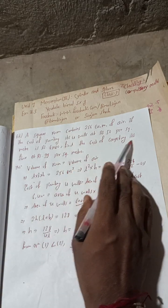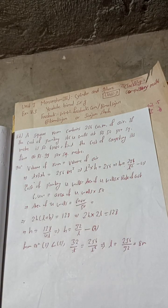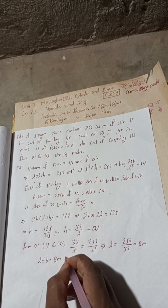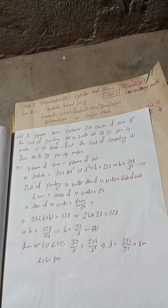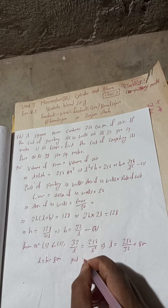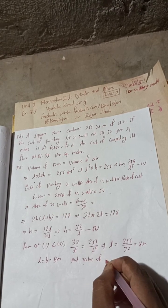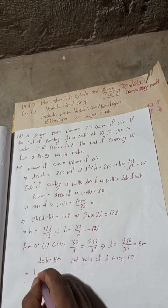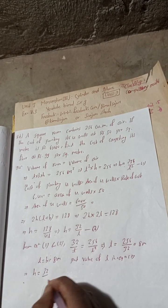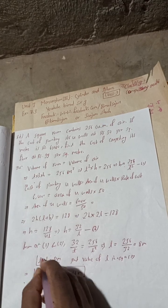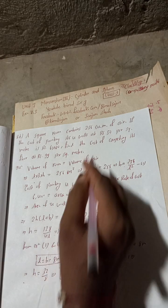So the room dimensions are: length = breadth = 8 meters. Now put this value of L into equation 2 to find the height: H = 32 / L = 32 / 8 = 4 meters. So length = breadth = 8 meters and height = 4 meters.